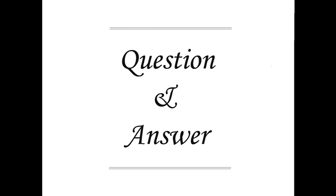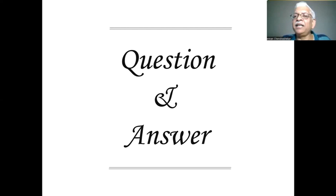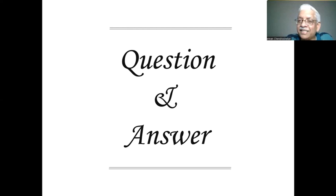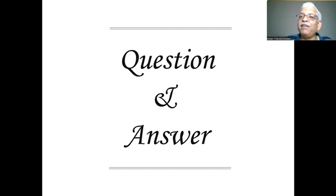There is a question from Manikandan: who controls the mind — is it the mind itself, Prarabdham, or Ishvara? A very good question. You will get the answer when we do the first verse of the Upanishad — your question is being asked by the student of Keno Upanishad right in the beginning. You are a good student. To give a brief answer: the mind is born because of Prarabdha Karma.